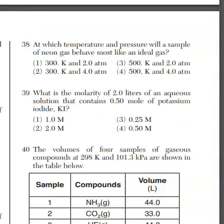For question 38, at which temperature and pressure will a sample of neon gas behave most like an ideal gas? Well, any gas is going to behave most like an ideal gas when you have high temperature and low pressure. If we want high temperature, 500K is higher than 300K. So let's knock out choices one and two. And we want low pressure. That's going to be two atmospheres versus four. So the answer is choice three. Again, high temperature, low pressure.